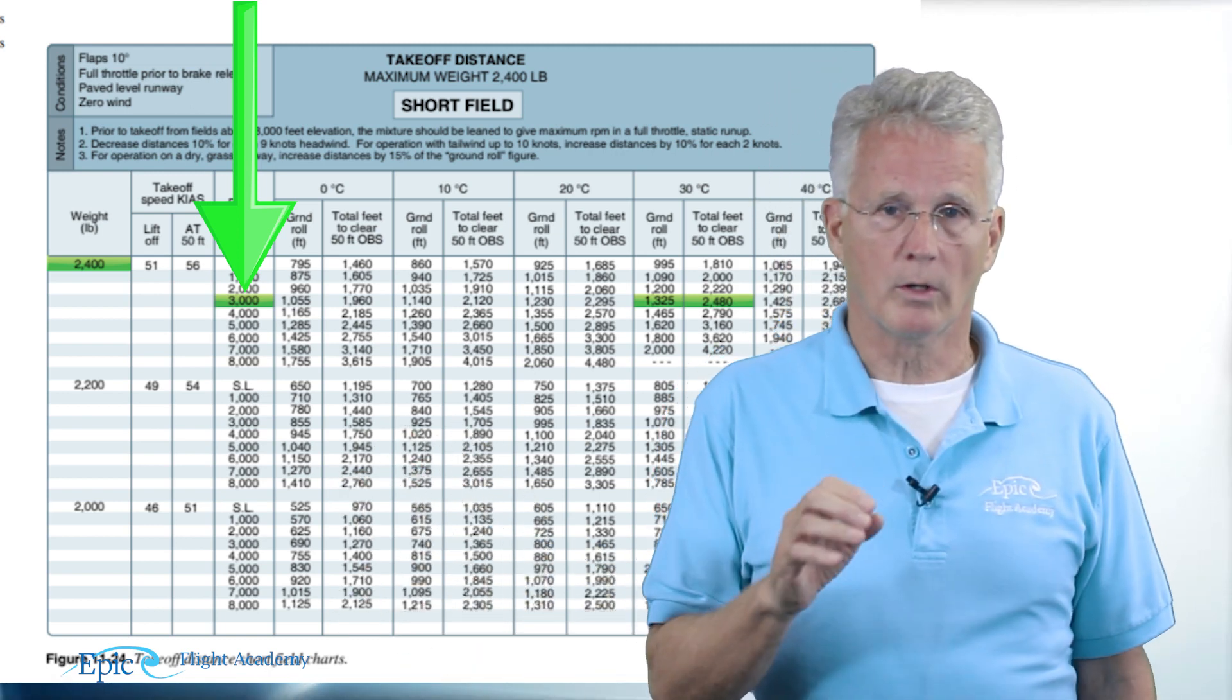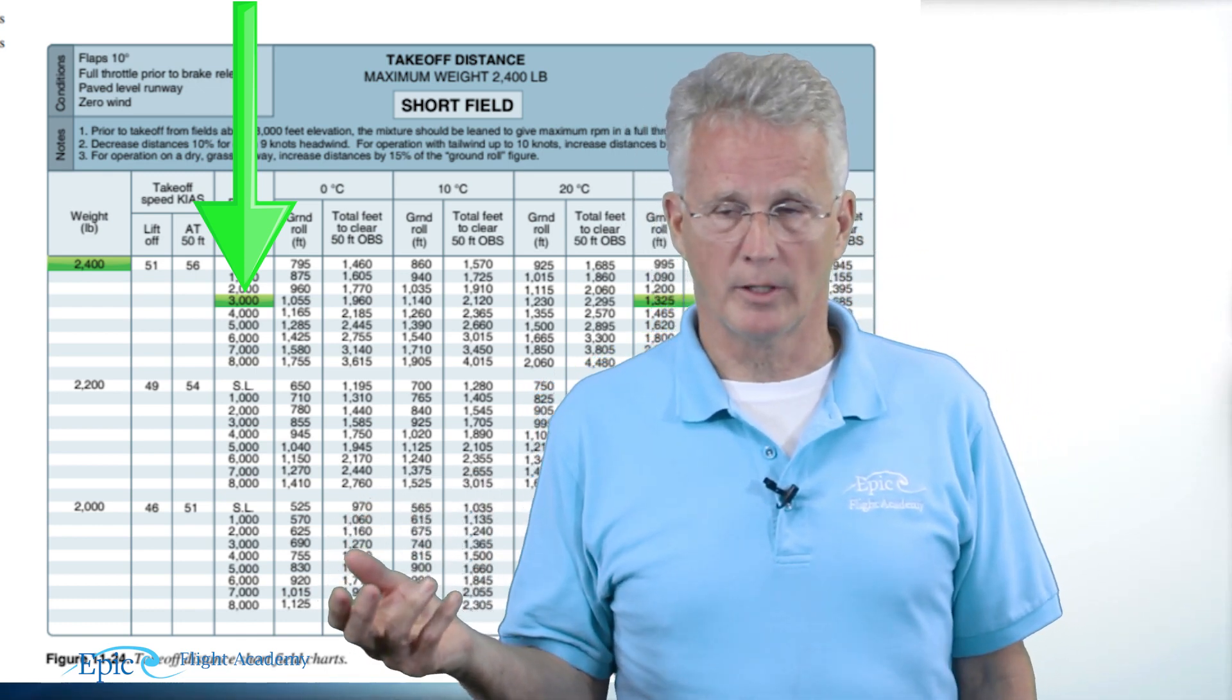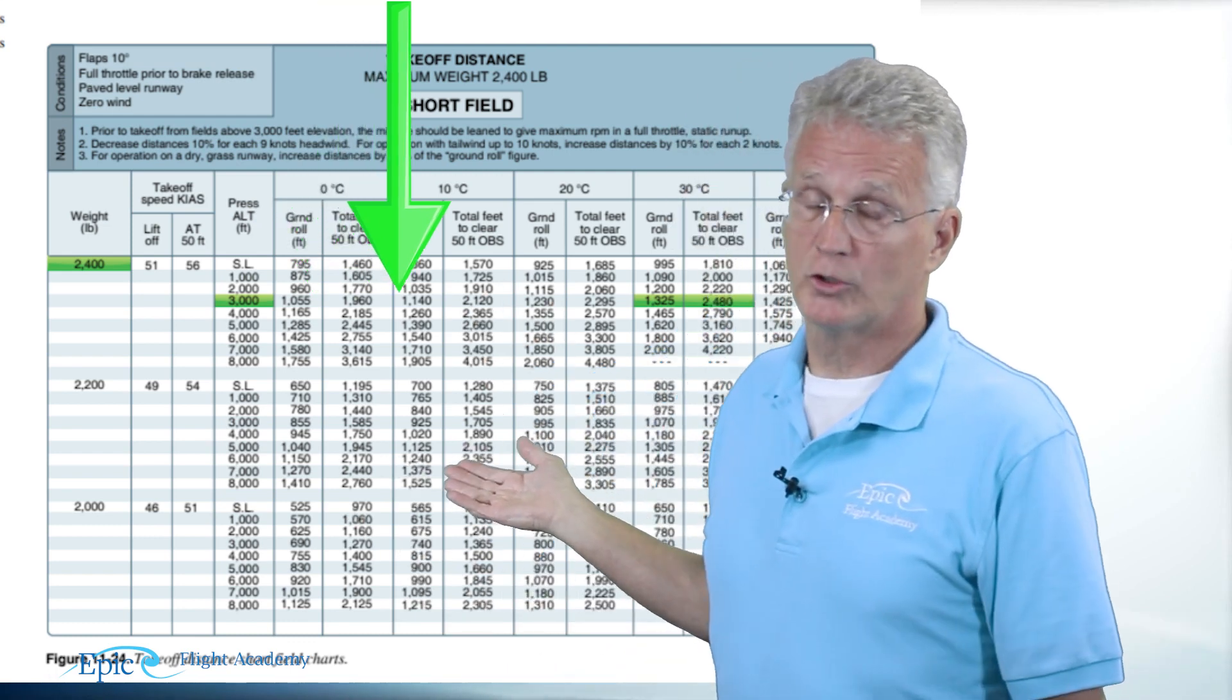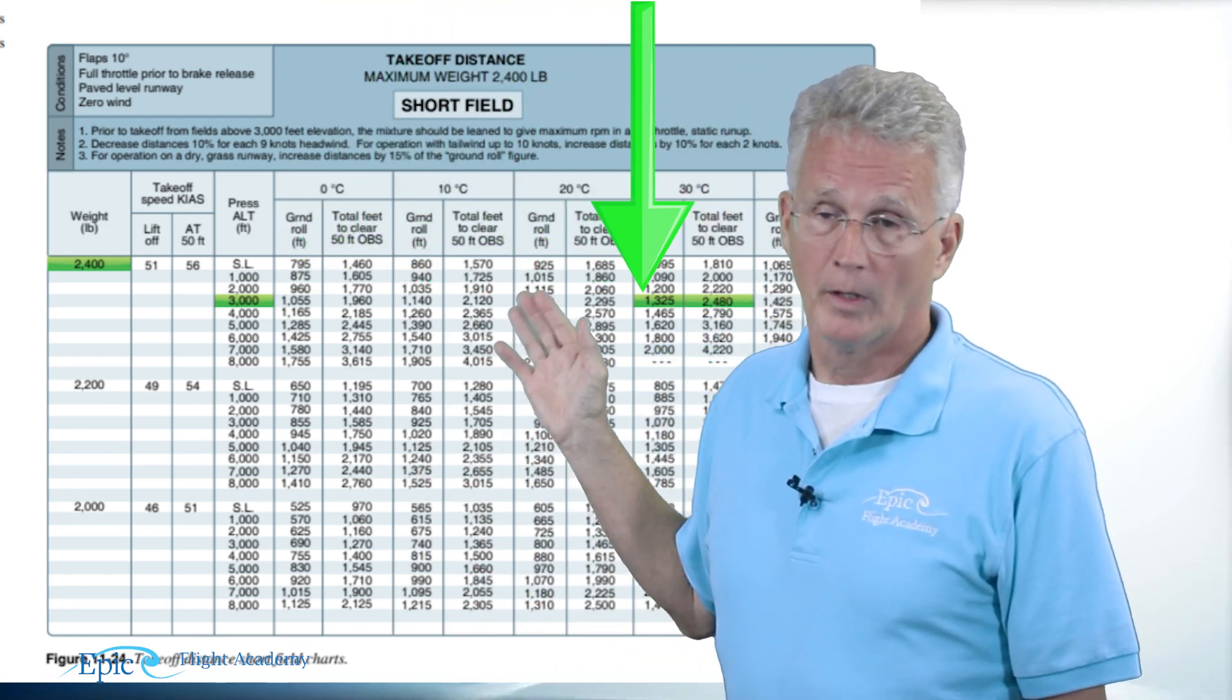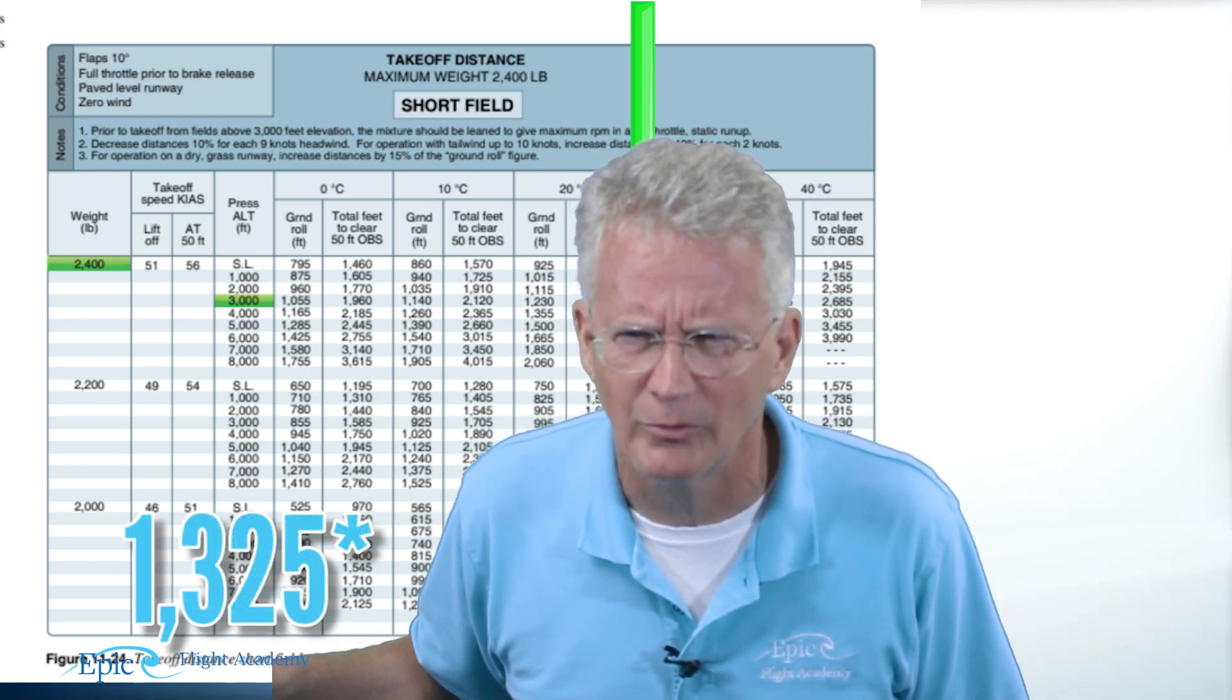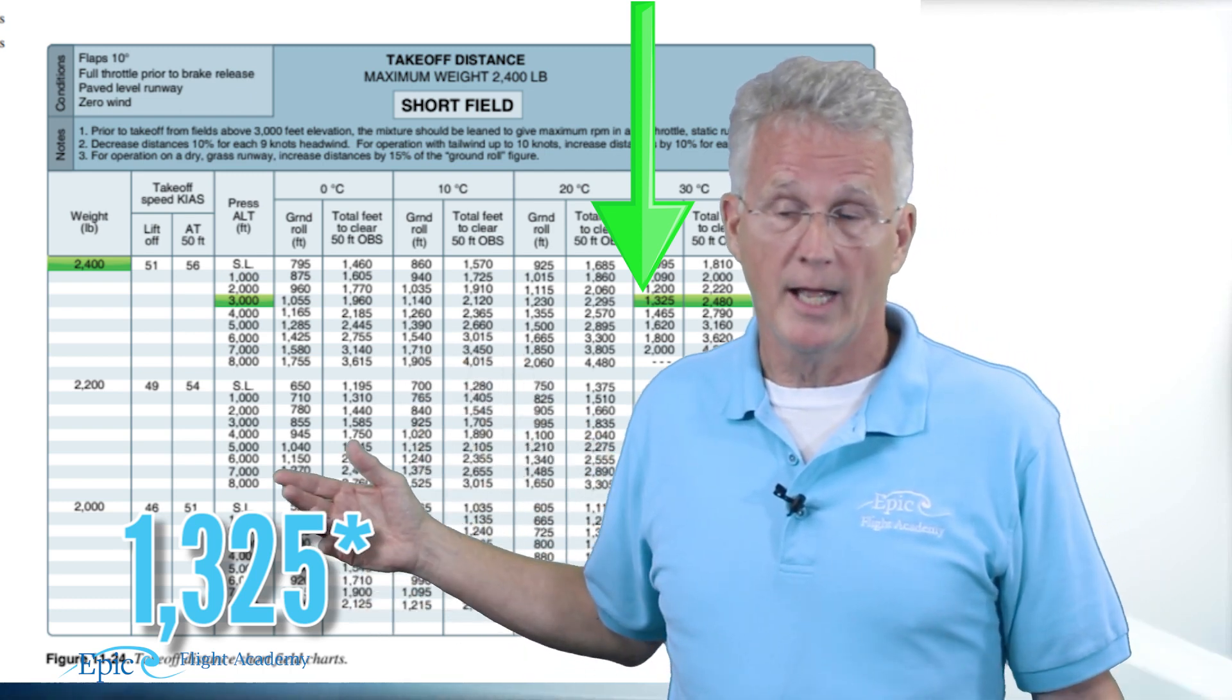Then we're going to work our way horizontally to the current outside air temperature. Notice the temperature in our example is 30 degrees Celsius and on the chart here you can see that highlighted in green we have under 30 degrees Celsius 1,225 and looks like 2,400 feet over the 50-foot obstacle.